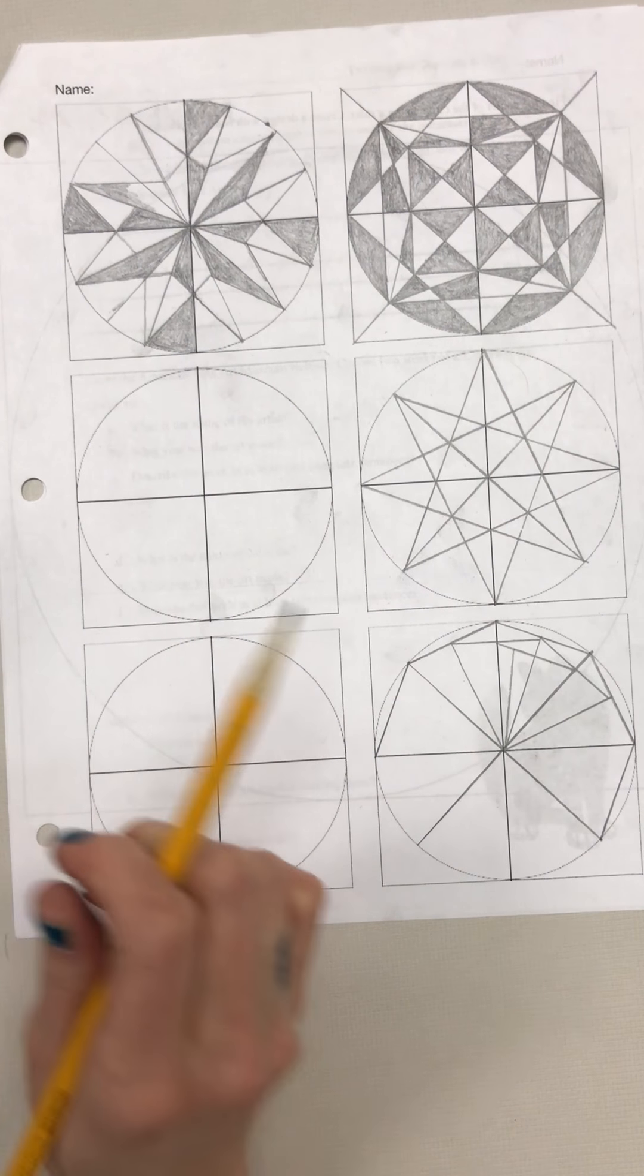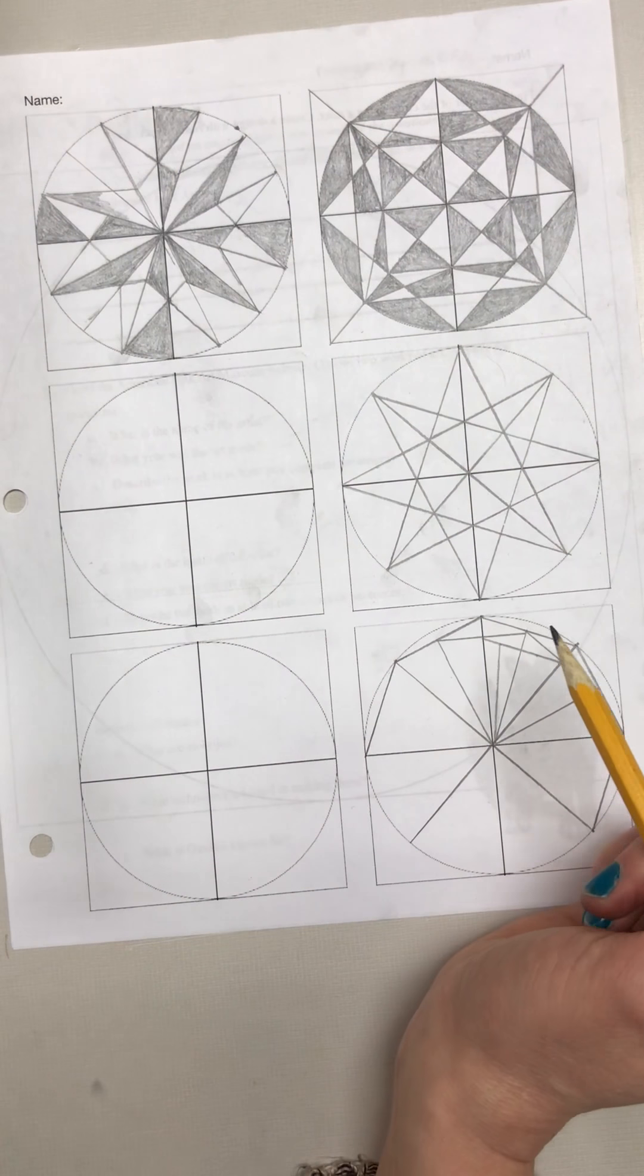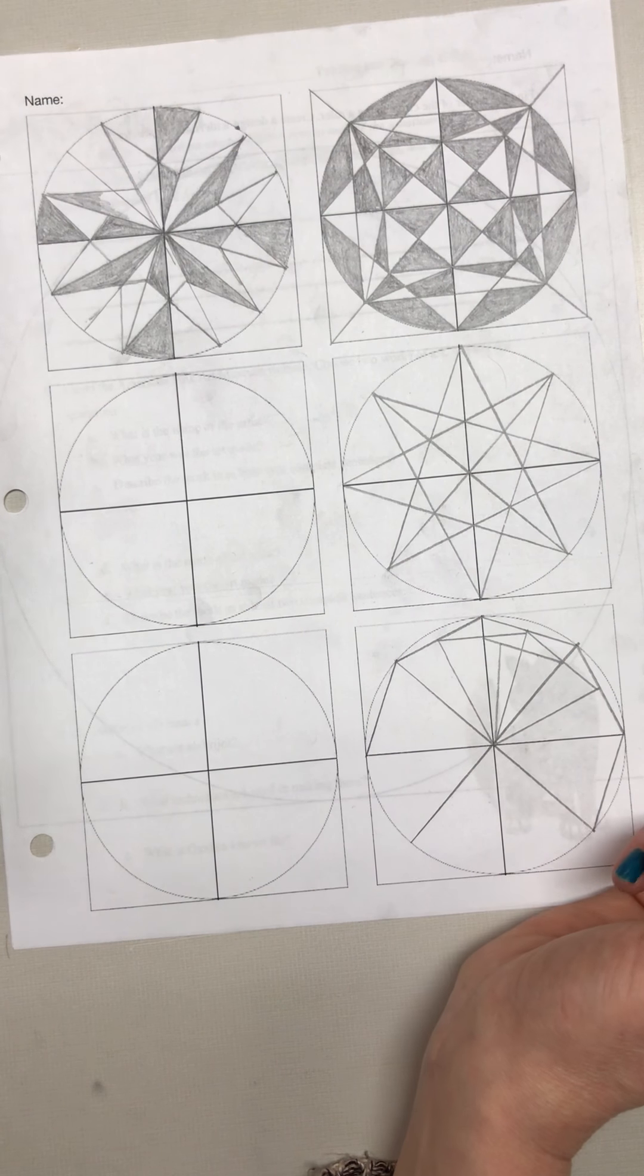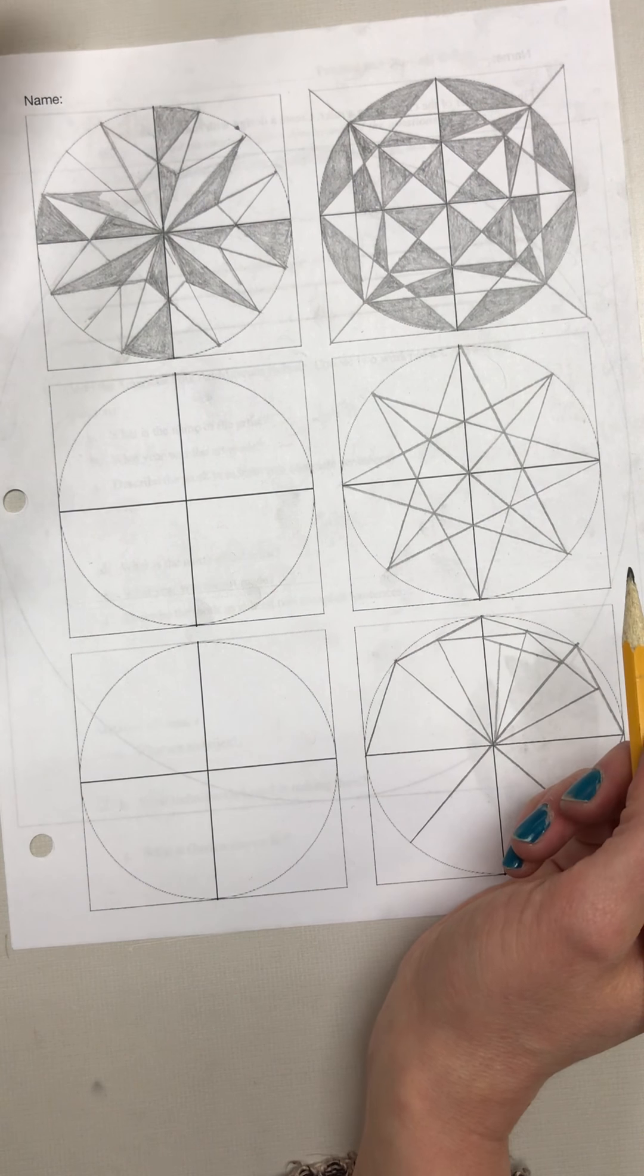When you're working on your thumbnail sketches for your neo-folk art, you're going to start with these six circles and experiment with different geometric designs. You do not need to measure this, but use a straight edge or ruler.